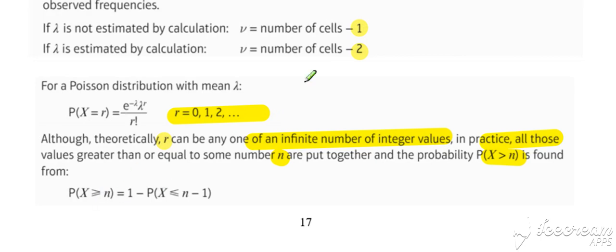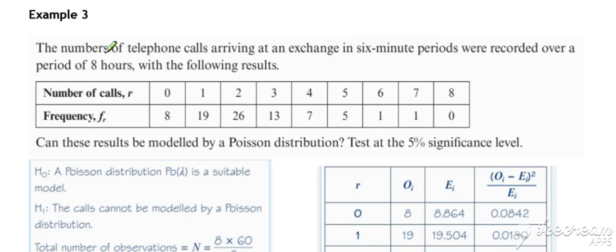Once you know all the others, you can fill in the last one rather than actually trying to calculate it. So look out for that in the subsequent examples. So here we go. Number of telephone calls arriving in exchange, a period of eight hours with the following results. So there's our observed frequencies. Can these results be modelled by a Poisson test at the 5% significance level?